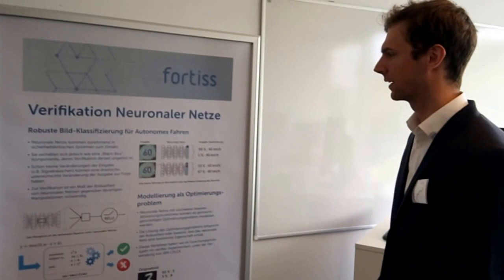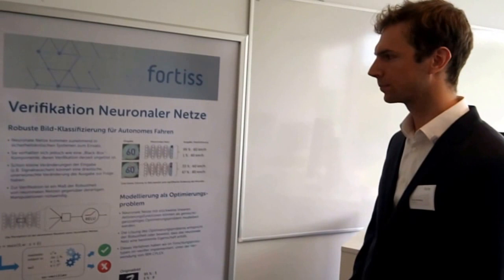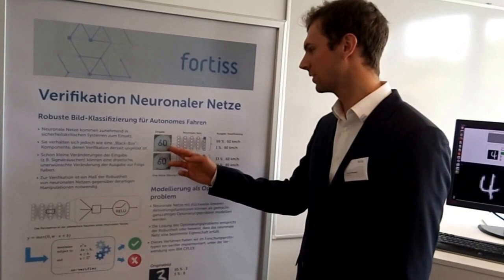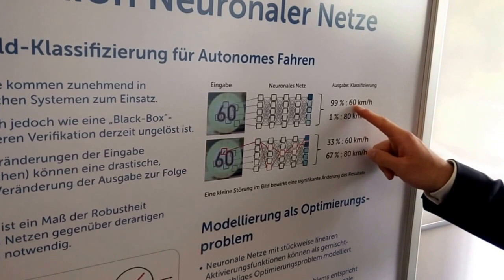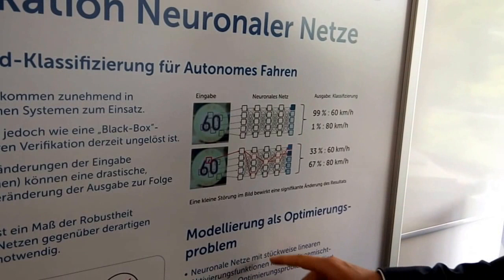So we have focused on the verification of safety properties of neural networks and the robustness of neural networks against modifications of the input. In the case of image recognition, we can see — maybe you can come closer — there is an original image which is classified as a speed sign with 60 kilometers per hour with high confidence.